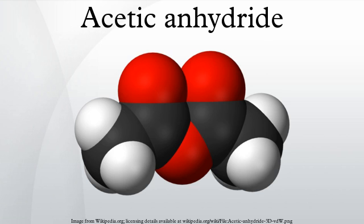CH3COOH gives H2C=C=O plus H2O; CH3COCH3 gives H2C=C=O plus CH4. The route from acetic acid to acetic anhydride via ketene was developed by Wacker Chemie in 1922, when the demand for acetic anhydride increased due to the production of cellulose acetate. Due to its low cost, acetic anhydride is purchased, not prepared, for use in research laboratories.